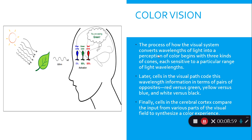The process of how the visual system converts wavelengths of light into a color perception begins with three kinds of cones, each sensitive to a particular range of wavelengths: blue, green, and red. Later cells in the visual pathway code wavelength information in terms of paired opposites. Your brain compares red versus green, yellow versus blue, and white versus black to determine actual color. Cells in the cerebral cortex then synthesize the complete color experience.